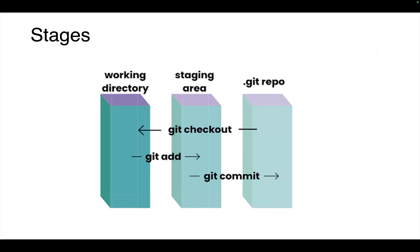Understanding git stages is crucial for navigating your git workflow. They represent the logical transitions where changes to your files occur before they are committed to a repository. We have the working directory, staging area, and the git repo. The working directory is where you edit, modify, and create files, representing the current state on your local machine. The staging area is like a holding area — a pre-commit zone where you prepare changes before committing. You can use `git add` or `git rm` to move changes from the working directory to the staging area. Unstaged changes are those not moved to the staging area.